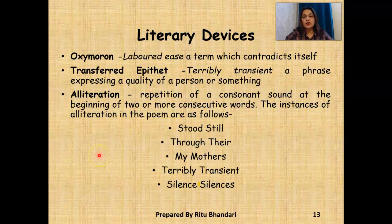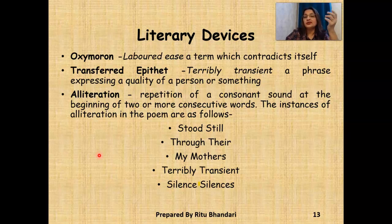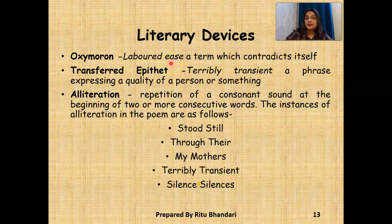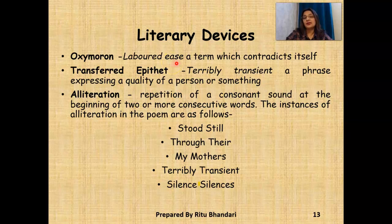Oxymoron. Oxymoron has been used and 'laboured ease of loss' is an example of that oxymoron. How is it an oxymoron? Ease is comfort and comfort must come without effort. But in this poem, the mother as well as the poet, both of them are trying to draw a lot of comfort from their loss and that comfort doesn't come to them easily — it comes with a lot of effort.